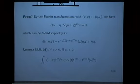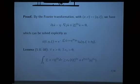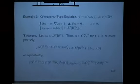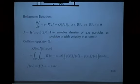The key point is that this inequality holds only in the presence of the integration in T. Without the integration in T, we cannot have this inequality at all. So the smoothing effect comes from the integration in T as well. Now let me go to the Boltzmann equation, which is the main part of my talk.